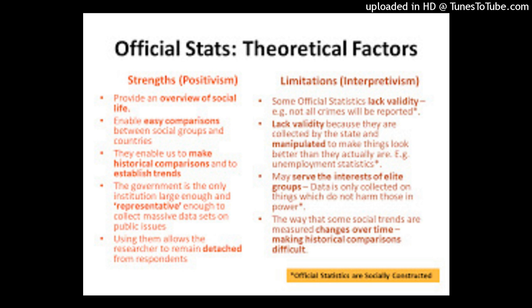For example, bivariate analysis in sociological research could be used to answer whether there is an association between income and quality of life, or whether the quality of life can be predicted from the income level. Why do researchers use cross-tabulation?